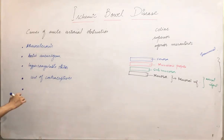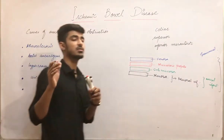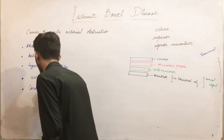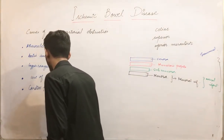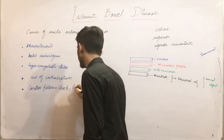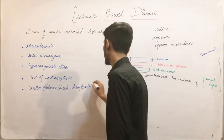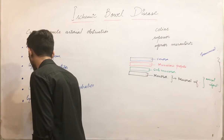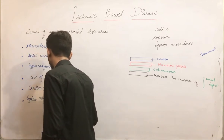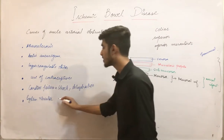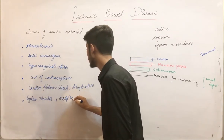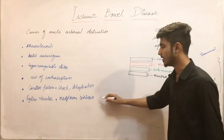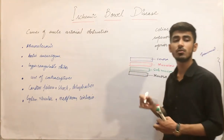Additional causes include intestinal hypoperfusion, which may occur due to cardiac failure — where blood supply is compromised — or in shock or dehydration. We also have systemic vascular diseases such as polyarteritis nodosa, as well as neoplasms and cirrhosis, all of which can compromise blood supply. These are the causes of acute arterial obstruction.